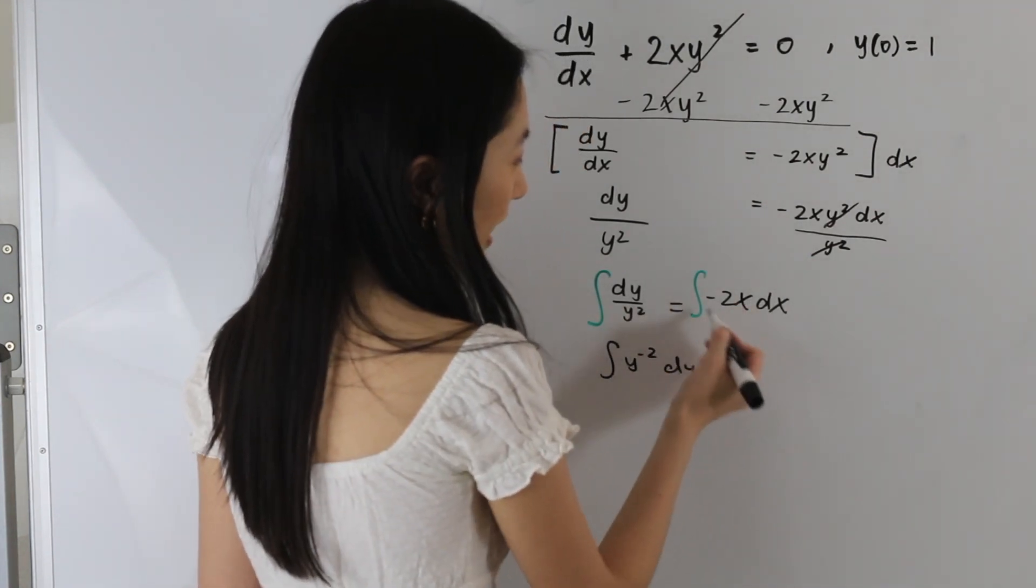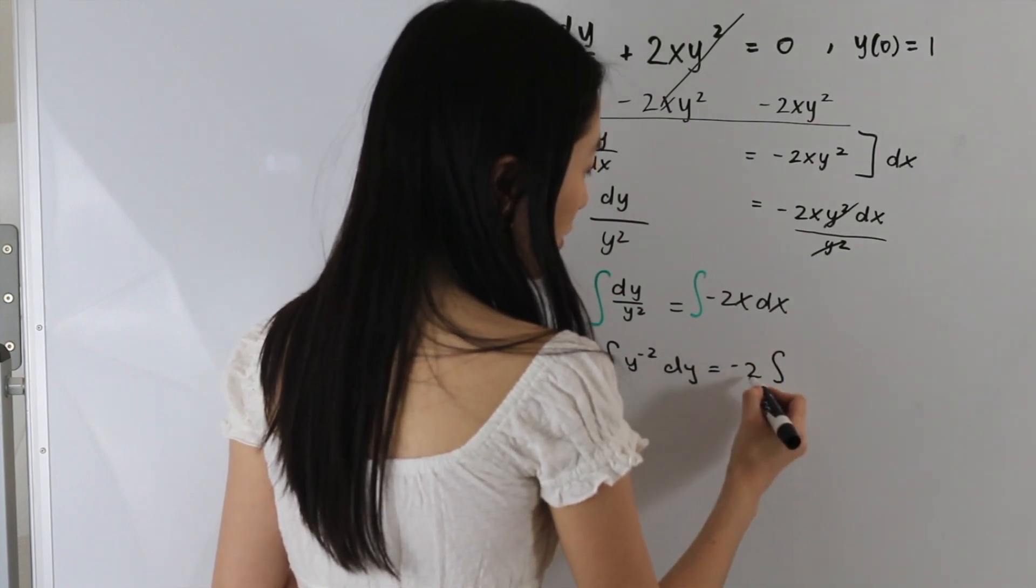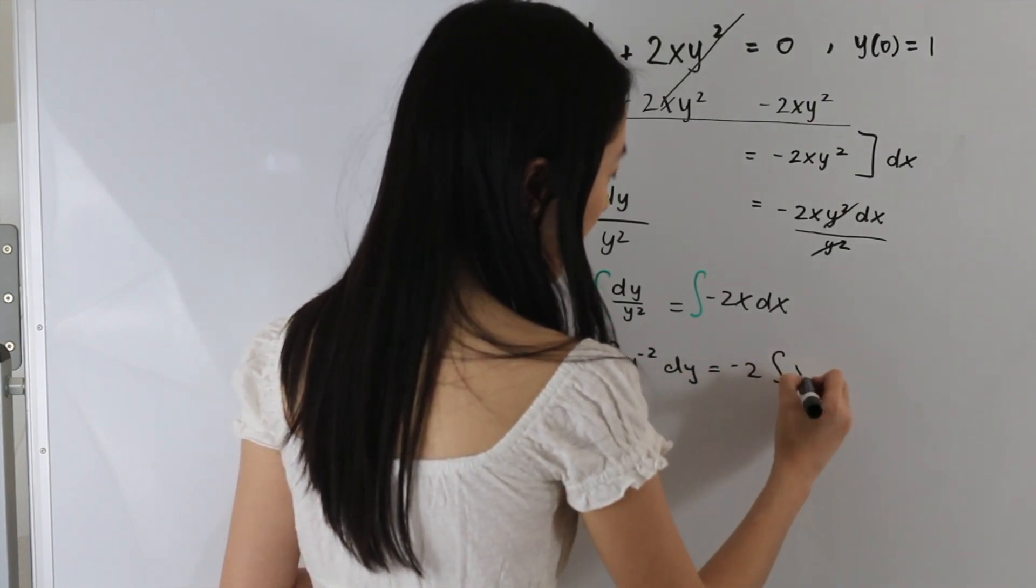And let's go ahead and bring out the negative 2 out of the integral. So we end up with negative 2 times the integral of x dx.